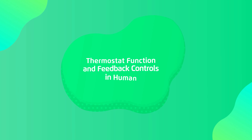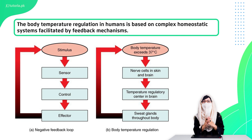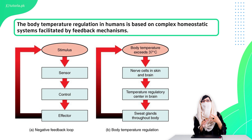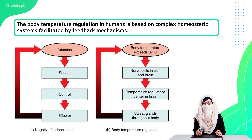Now let's discuss the last topic of our chapter — the thermostat function in feedback control in humans. In our body, the control system has 5 components, and those components make sure that every condition in your body is homeostasis, meaning your internal conditions are maintained in a certain narrow range. For example, if our body's temperature is high, then it will be considered a stimulus.